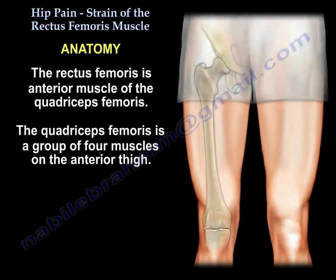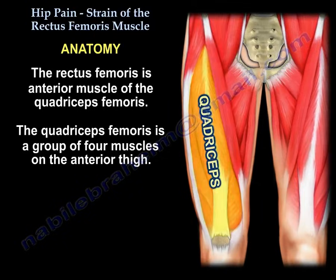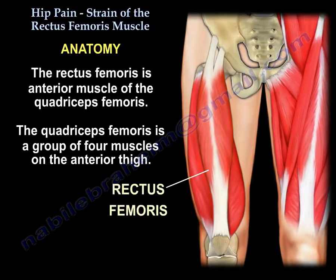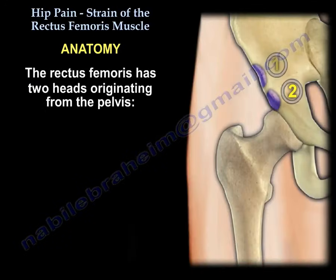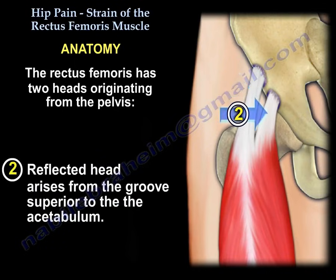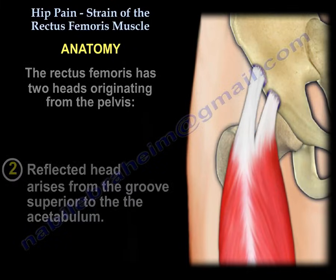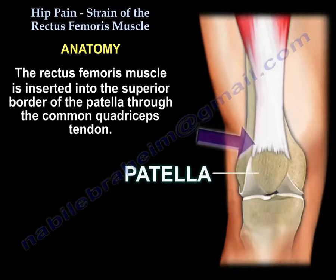The rectus femoris is the anterior muscle of the quadriceps femoris, which is a group of muscles in the anterior thigh. The rectus femoris has two heads or two origins. The straight head arises from the anterior inferior iliac spine of the pelvis. The reflected head originates from a groove superior to the acetabulum. The muscle is inserted into the superior border of the patella through the common quadriceps tendon.